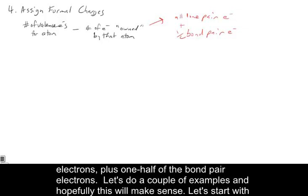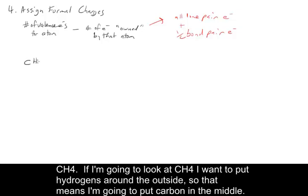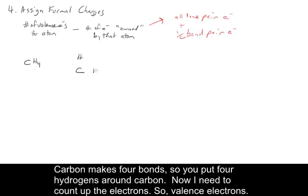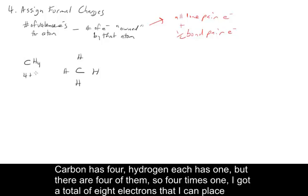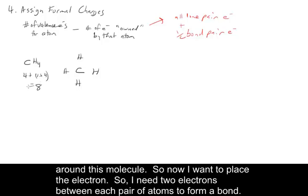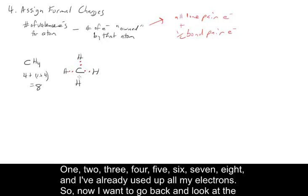Let's do a couple of examples. Starting with CH4 — put hydrogens around the outside, so carbon goes in the middle. Carbon makes four bonds, so I put four hydrogens around carbon. Now count the electrons: carbon has four valence electrons, and each hydrogen has one, with four hydrogens that's four times one. So I've got a total of eight electrons to place. I need two electrons between each pair of atoms to form a bond: one, two, three, four, five, six, seven, eight — and I've used up all my electrons.